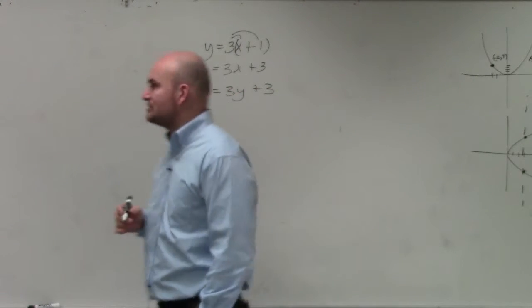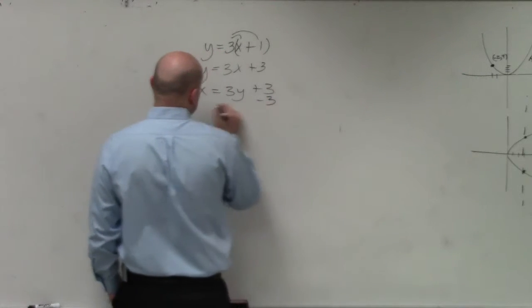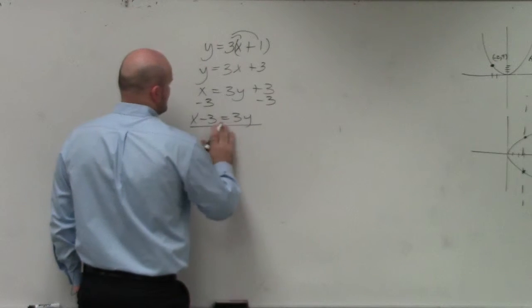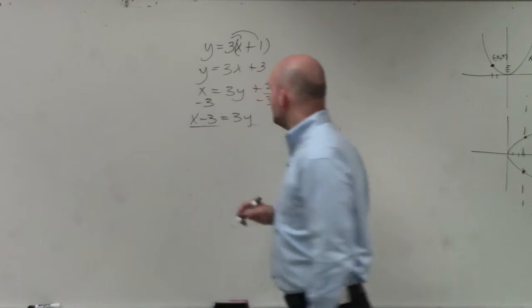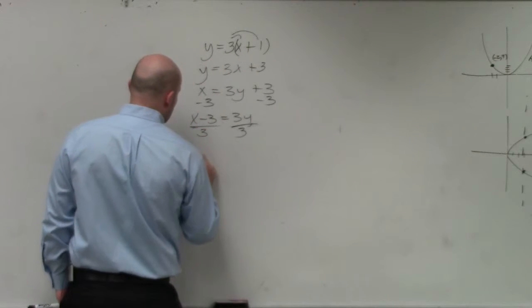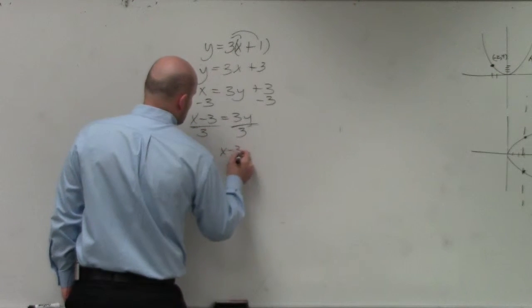And then we just go ahead and solve for y. Oops. Therefore, now to solve for y, I'll divide by 3 on both sides. So I have y equals x minus 3 over 3.